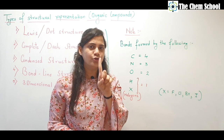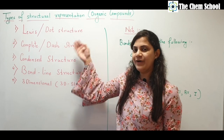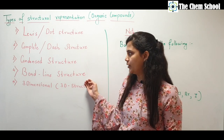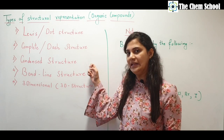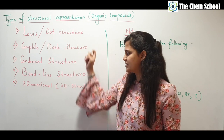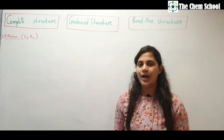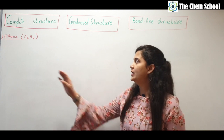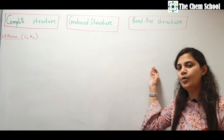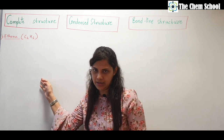Amongst those five types, the second, third, and fourth are more important, so we will deal with them first. At the end we will talk about the Lewis structure and the three-dimensional structure. Let's talk about complete, condensed, and bond line structures with the help of an example — ethane.